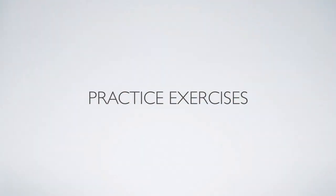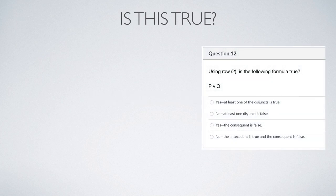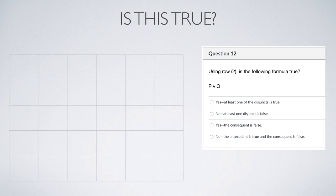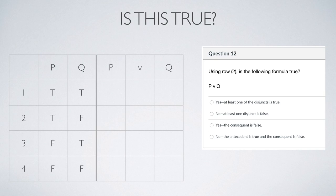We're going to try some practice exercises using truth tables. The first exercise is to determine whether a proposition is true using a particular row on the truth table. You're given four options, yes or no, but you have to spot the right reason for whether the proposition is true or false. Following rule five, we have two variables in our formula p or q, giving us four rows, and following rule six we have every possible combination of truth assignments for the atomic propositions.